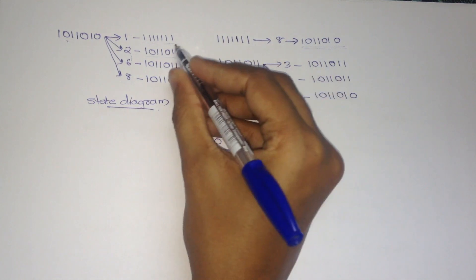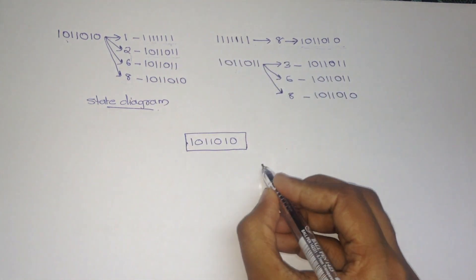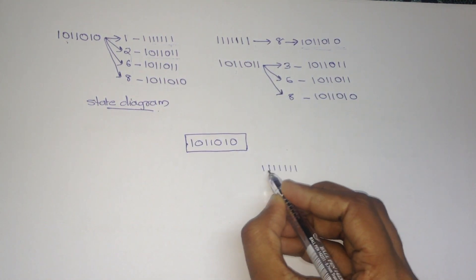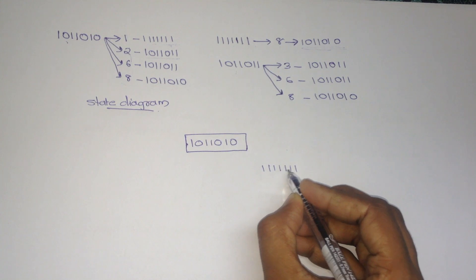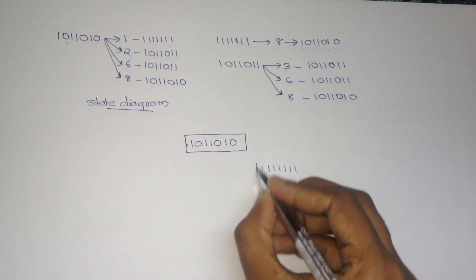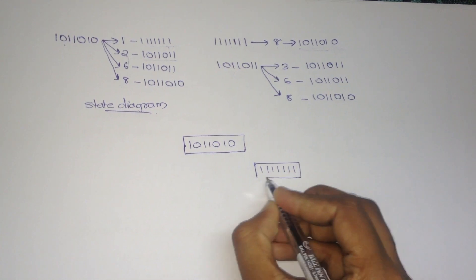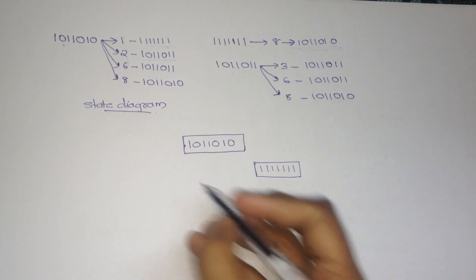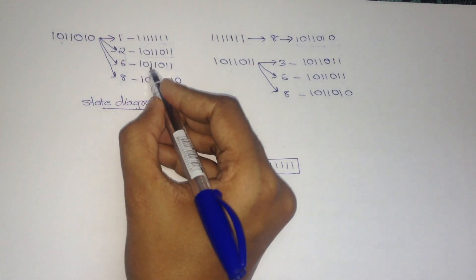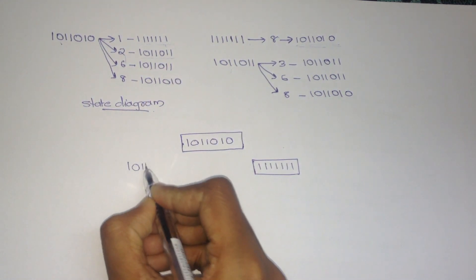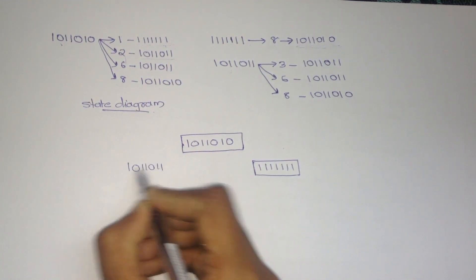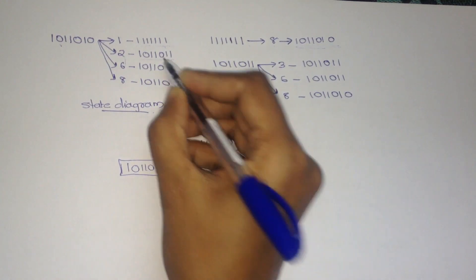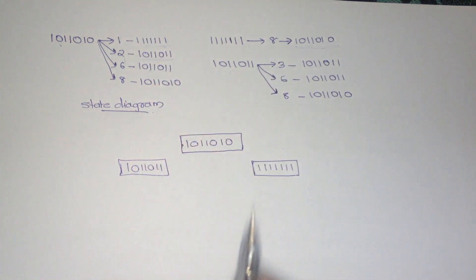The second state is 1, 1, 1, 1, 1, 1. Next state is 1, 0, 1, 1, 0, 1, 1. These both are the same state vectors that we have computed.